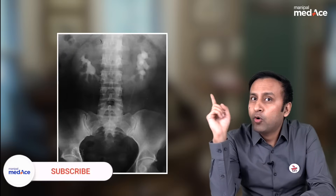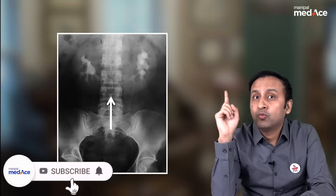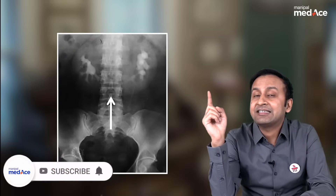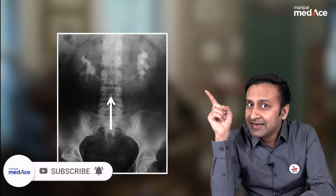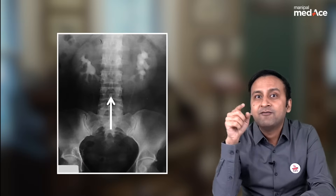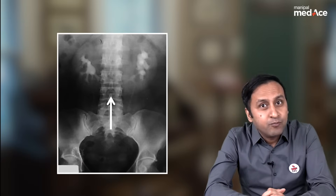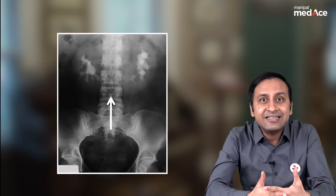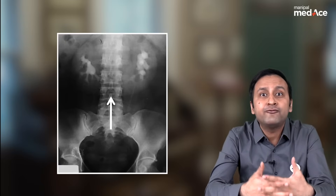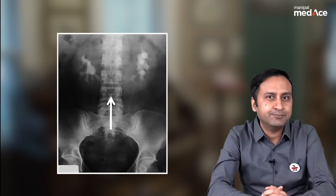What do you see here? Both the kidneys are lying slightly caudally, and there is this enhancing parenchymal band connecting the lower pole of both the kidneys. This is a classical example of a fusion abnormality of the kidney — specifically, a horseshoe kidney.